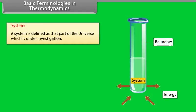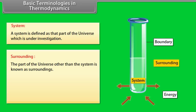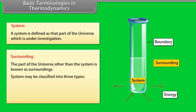Basic terminologies in thermodynamics — System: A system is defined as that part of the universe which is under investigation. For example, if we are studying the effect of temperature on the properties of water, then water will be taken as the system. Surroundings: The part of the universe other than the system is known as surroundings. For example, if a reaction mixture is taken in a test tube, the reaction mixture constitutes the system, the walls of the test tube constitute the boundary, and everything else is the surroundings.